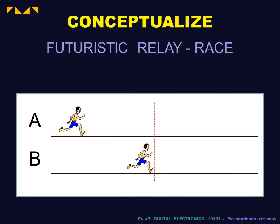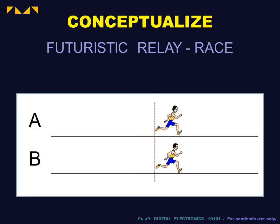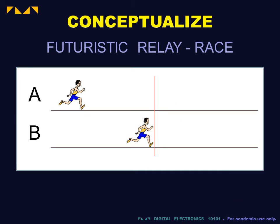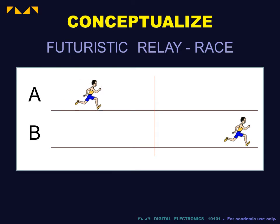We will conceptualize our design using the example of a futuristic relay race. In such a race, runners on the same team take turns to complete the race. At fixed points of the course, marked by a line on the track that we will call the red line, the incoming runner A must hand off to the waiting runner B. In our race, a handoff is illegal if B steps over the red line before A does.